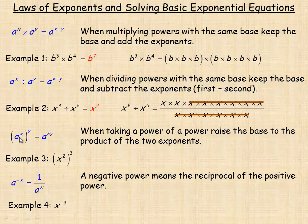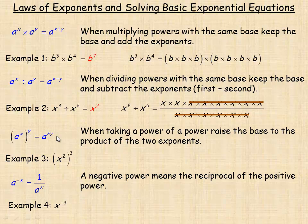The third law is the power of a power rule: a to the x, raised to the power of y. When taking a power of a power, you raise the base to the product of the two exponents — multiply x and y to get x times y.